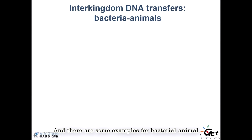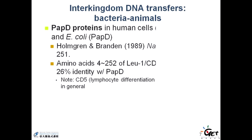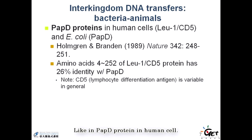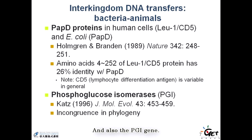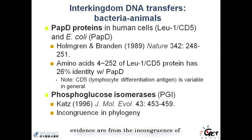There are some examples of bacterial-to-animal DNA transfer, like the PAPD protein in human cells, documented a couple of years ago, and also the PGI gene. Again, the evidence for these comes from incongruence in the phylogenies.